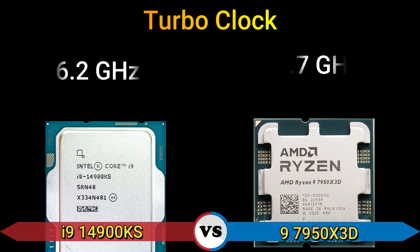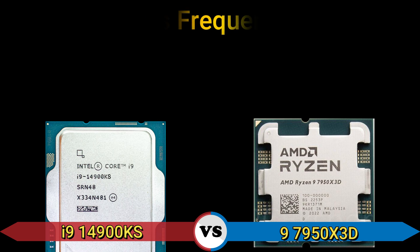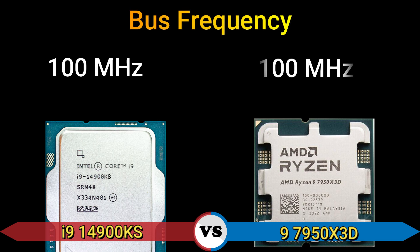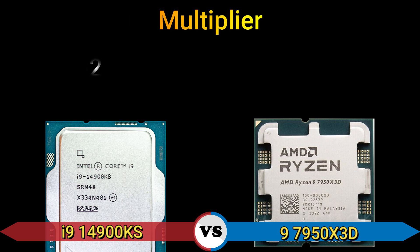Turbo clock: 6.2 GHz and 5.7 GHz. Base frequency: 100 MHz. Multiplier: 32x and 42x.